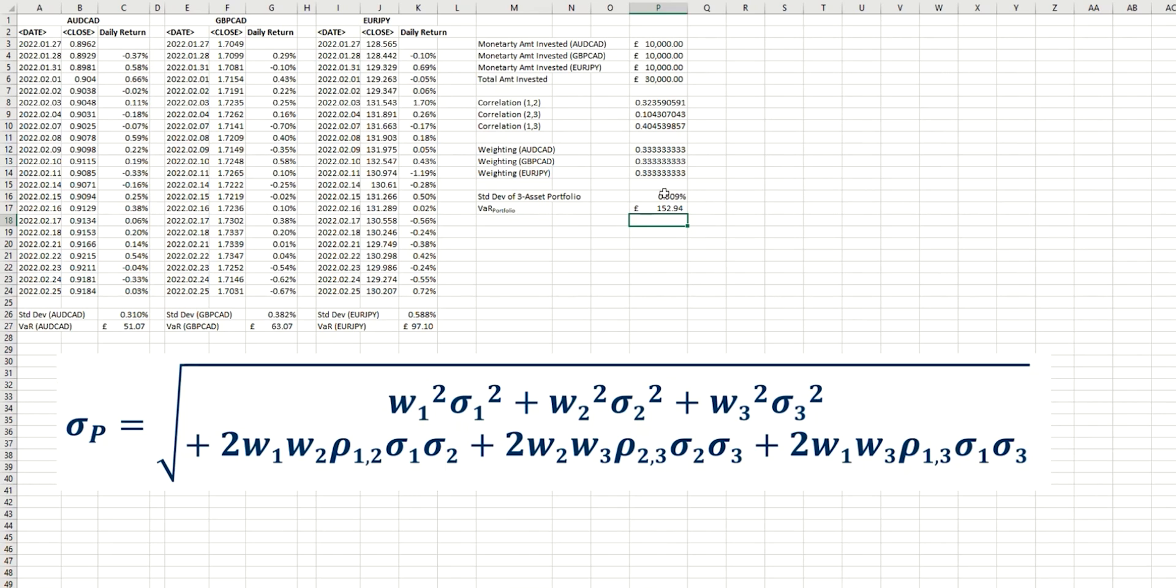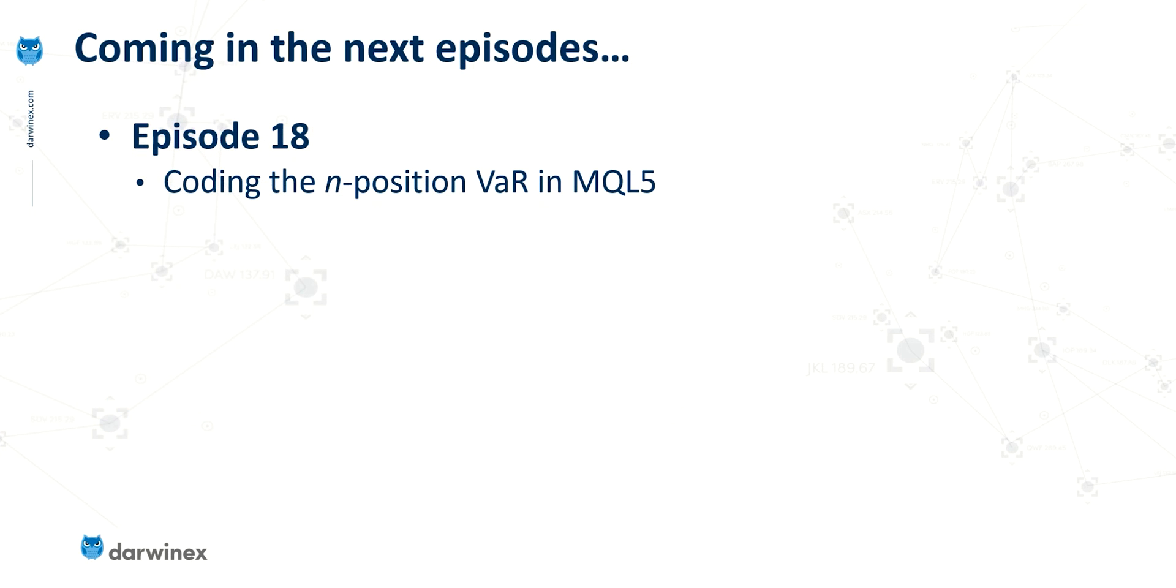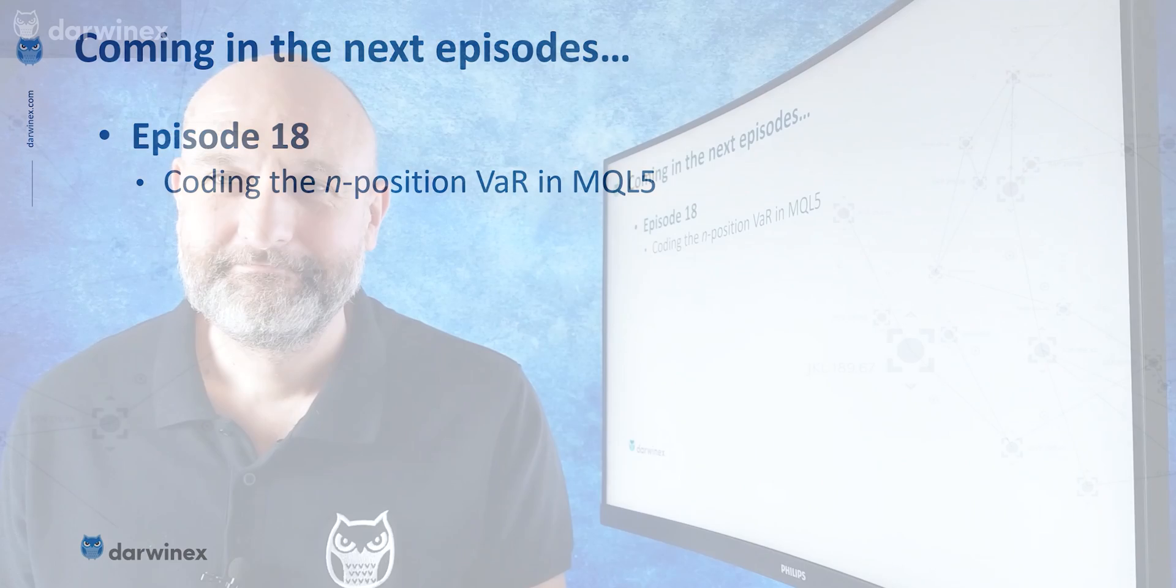Now, as you can see with the calculation here, it really is becoming quite complex. And so to go above three positions would really take quite some time to produce in Excel. However, in code, as long as we set up our calculation loops properly, then it doesn't really matter whether we are coding this for just three positions or any number of positions. And this is what I'll show you in the next episode.